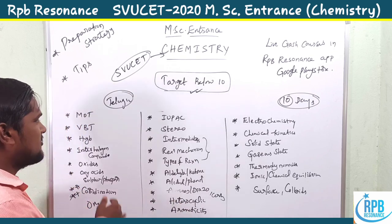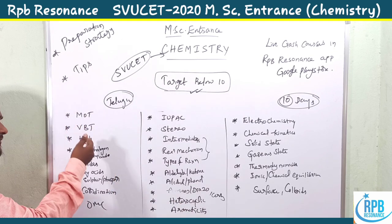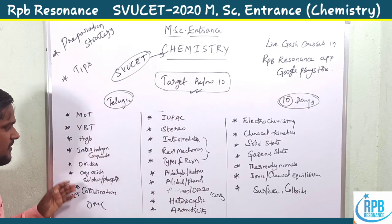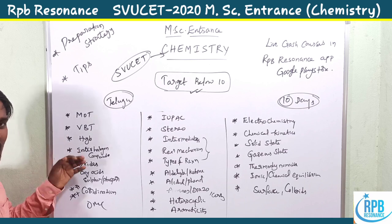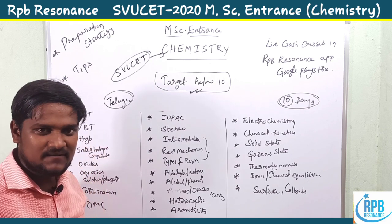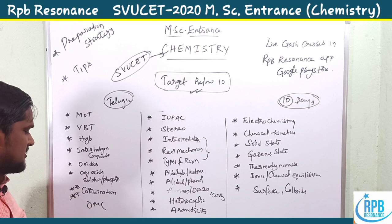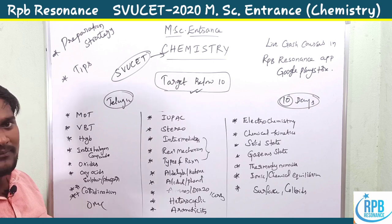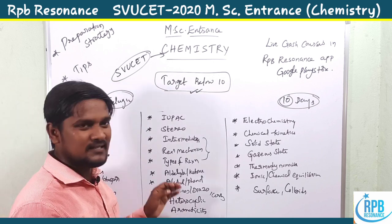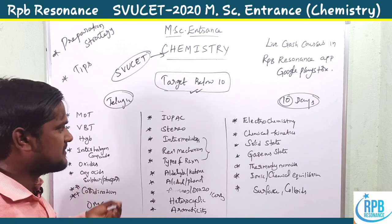These are the inorganic chemistry important topics: MOT, VBT, hybridization, intrahalogen compounds, oxides, oxy acids of sulfur and phosphorus, coordination chemistry, organometallics. These are the very important topics for inorganic chemistry.